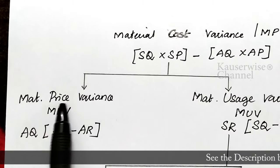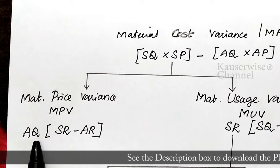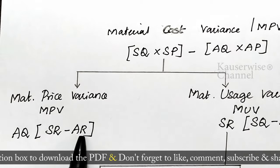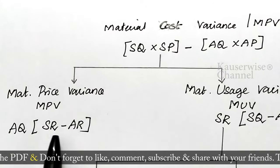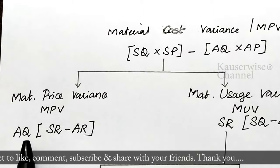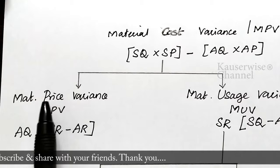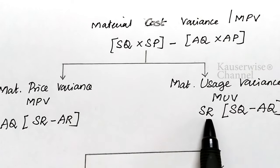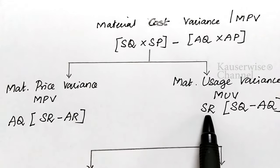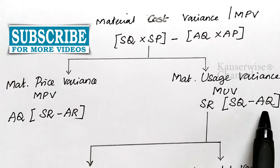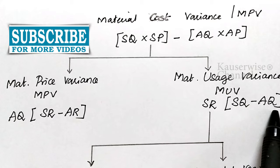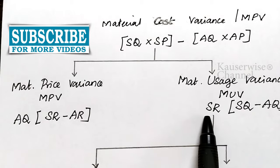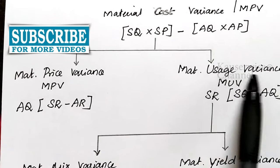For material usage variance, the formula is: standard rate × (standard quantity − actual quantity). Find the difference between standard quantity and actual quantity, then multiply by standard rate. For material mix variance, the formula is: standard rate × (standard quantity − actual quantity), or if there is a revision in standard quantity, use the revised standard quantity instead.